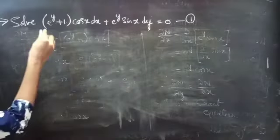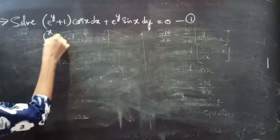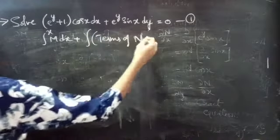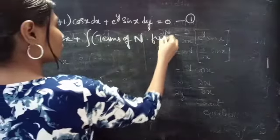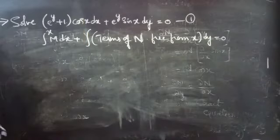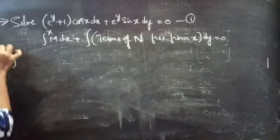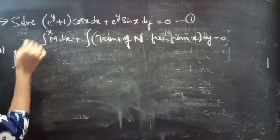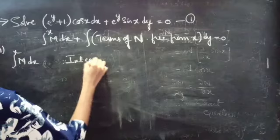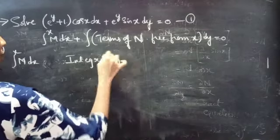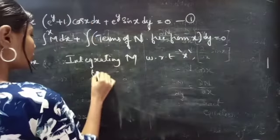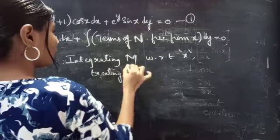Now the general solution of equation 1 is given by: the integral over x of M dx, plus the integral of terms of N free from x into dy, equals to 0. So firstly we will find the integral over x of M dx, integrating M with respect to x treating y as constant.